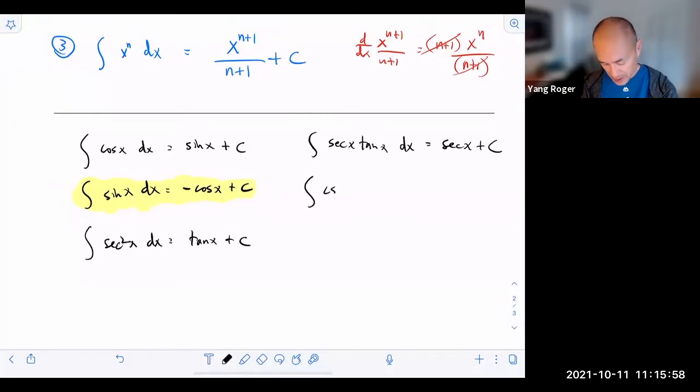The antiderivative of cosecant x cotangent x dx. Remember, that's going to have a negative in front because it's a co-thing. Sometimes people put the negative here and sometimes they put the negative here. It means the same thing. The antiderivative of negative cosecant squared x dx is equal to cotangent of x plus c.